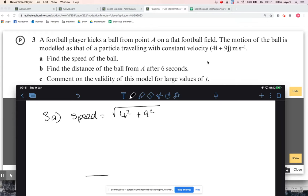So the velocity is 4 to the right and 9 up, and the speed is just the magnitude of that vector there, so that's why I'm just using Pythagoras. So that is going to be the root 97.